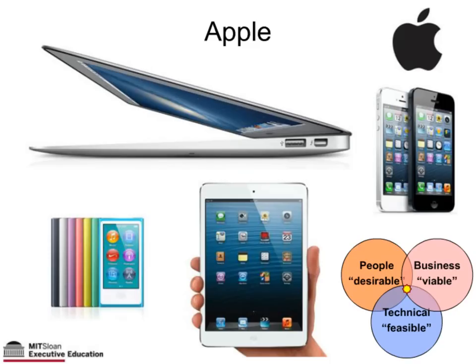And of course, Apple is easy to talk about when discussing innovation — they've had a remarkable track record particularly over the past ten years. They've created an amazing user experience, so it's desirable from a people dimension. They lead in technology, and they've innovated in business models with apps, iTunes, and so forth — not just selling products but selling services online. These five examples from different industries all succeed because they've innovated across all three dimensions.